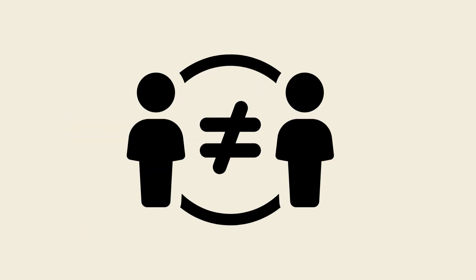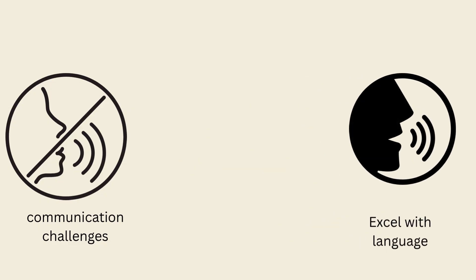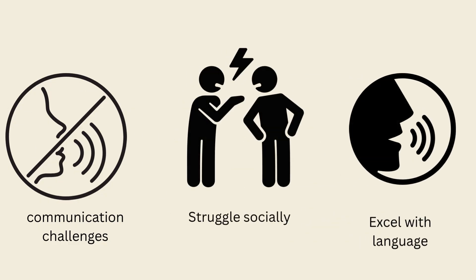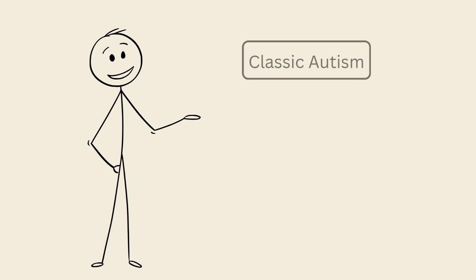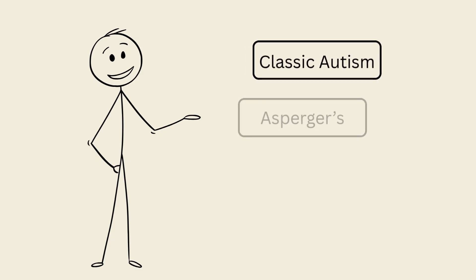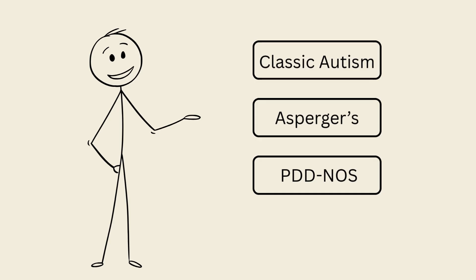Autism is a spectrum, meaning it doesn't look the same for everyone. Some people face major communication challenges while others excel with language but struggle socially. Over the years, different labels like classic autism, Asperger's, or PDD-NOS have been used to describe these differences.